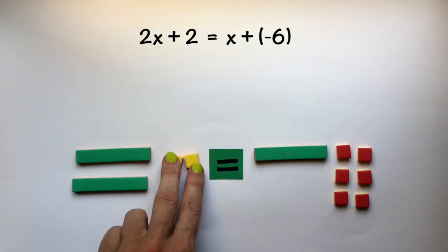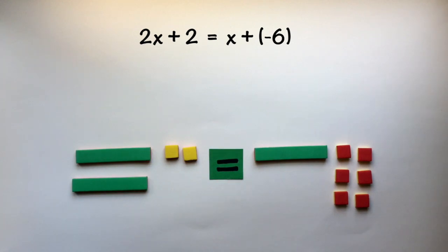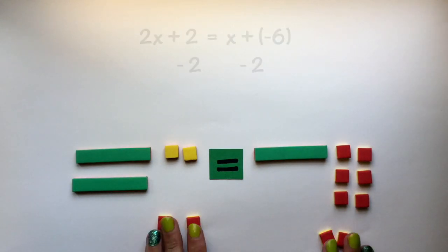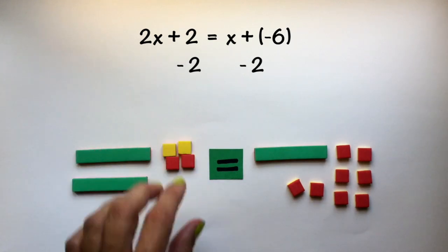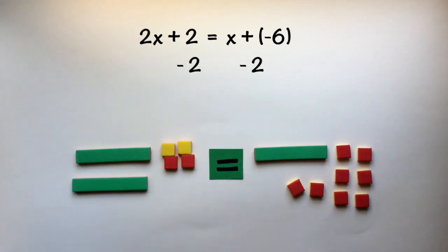We have two positive tiles. We could eliminate them by adding negative 2 to both sides, therefore making zero pairs on this side in order to remove them.